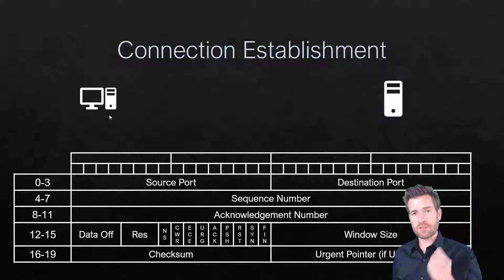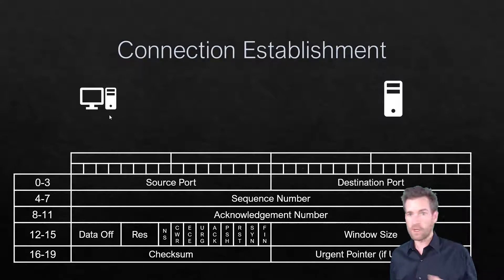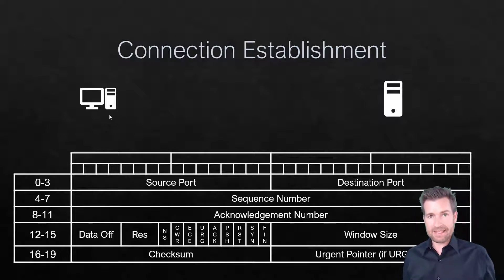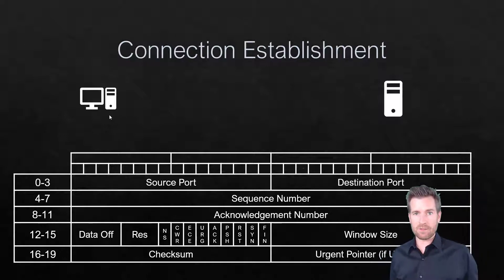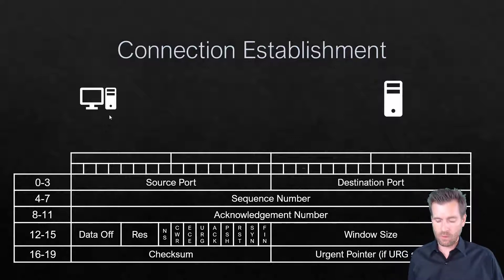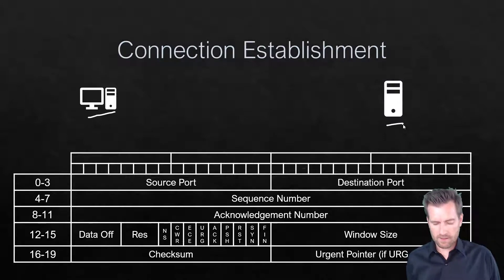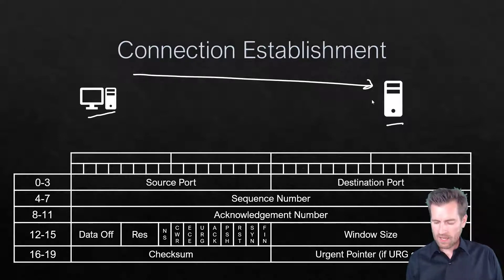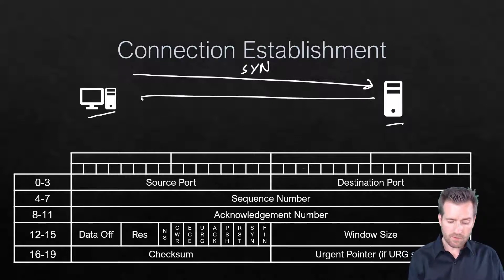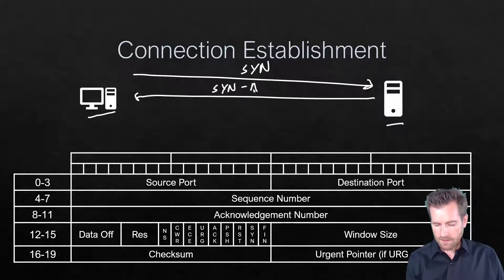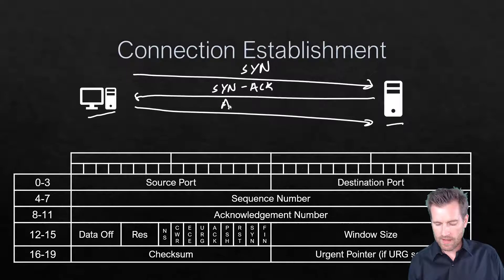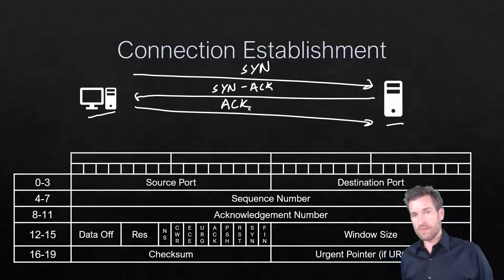TCP first establishes a connection before it starts transferring any major data. This layer 4 connection established back and forth is called the three-way handshake. There are three components to it. A PC asking for a web page from a server will send a SYN message. The server replies back with a SYN-ACK, and then the PC sends an ACK back. This is the three-way handshake that gets exchanged to establish the connection.